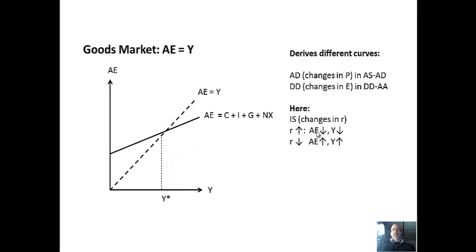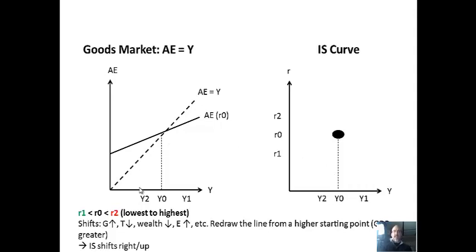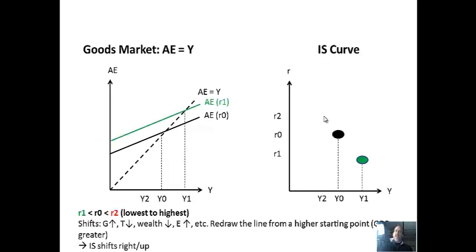Raising the interest rate lowers aggregate expenditure because of investment, leading to lower GDP in equilibrium. Lowering the interest rate does the opposite — it raises investment, raises total spending, and raises total GDP. Let's map out three points: a low interest rate, the starting point in the middle, and a higher interest rate. Lowering the interest rate from the starting point gives us higher spending. The IS curve is mapped on a graph with R on the vertical axis and Y on the horizontal. Lower R gives higher Y (green point); raising rates causes investment to drop and the multiplier kicks in, giving lower equilibrium GDP.